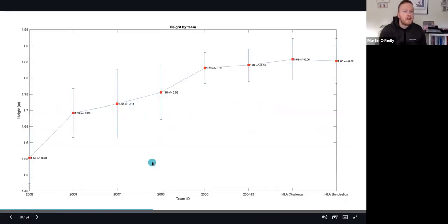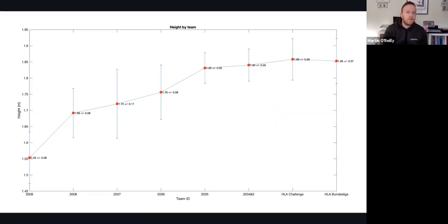Initially just looking at height, just to show the descriptive statistics of the group, you can see that the average height from the 2009 born players was around 1.55 centimeters up to about 1.86, 1.85 on both the HLA challenge and HLA Meisterleiger teams.